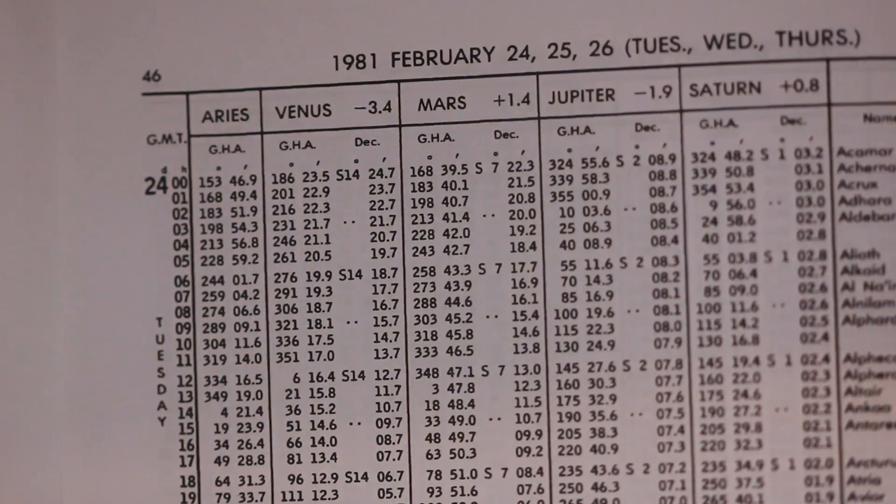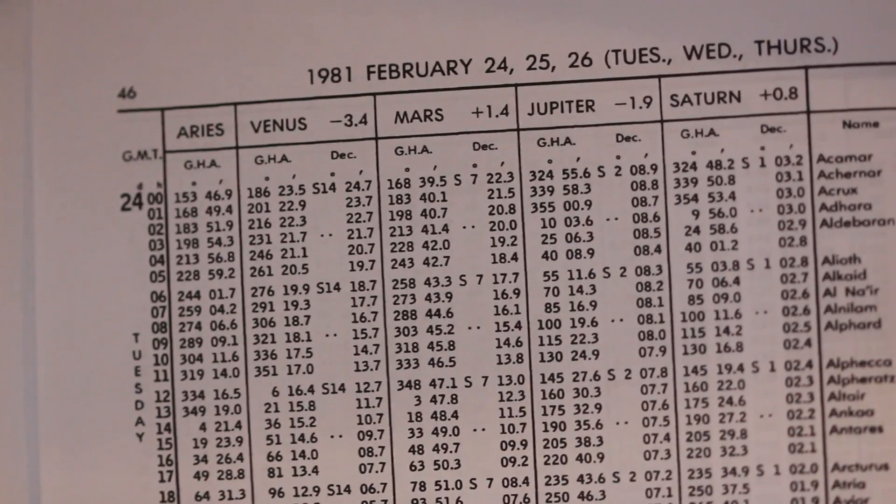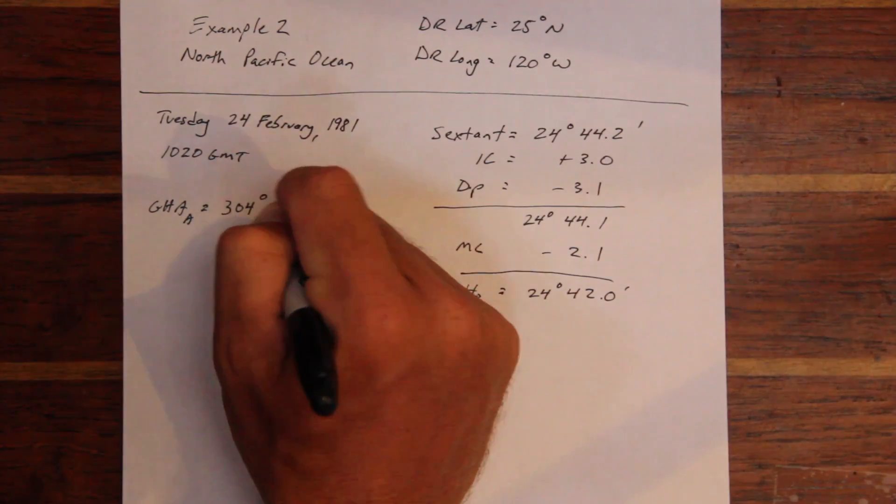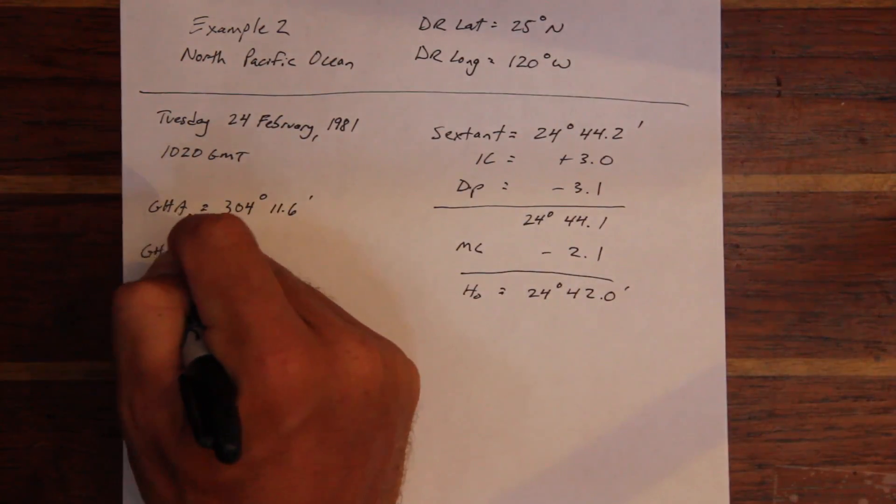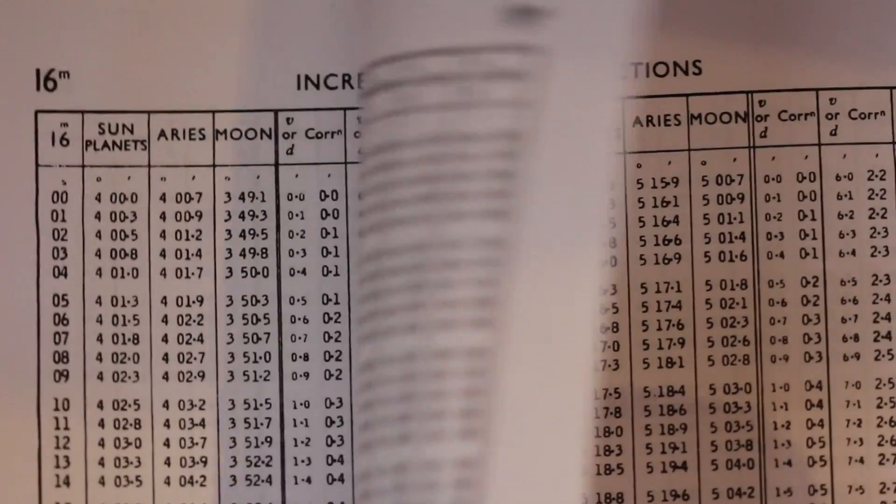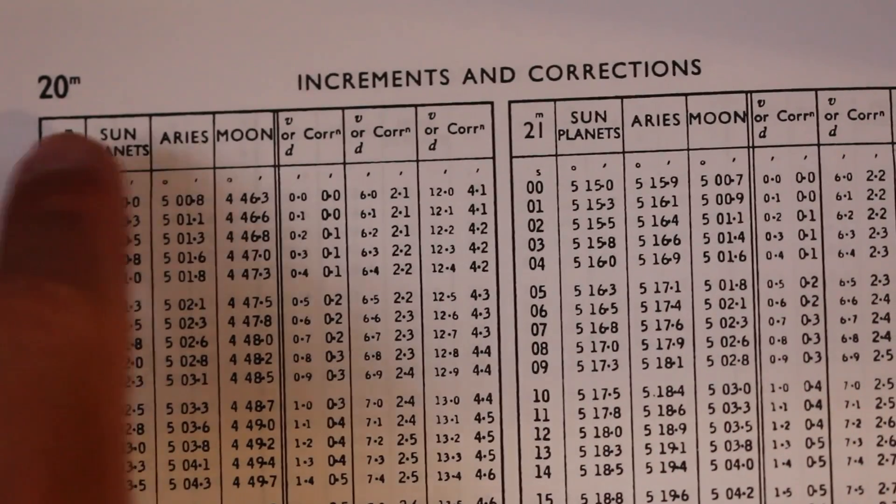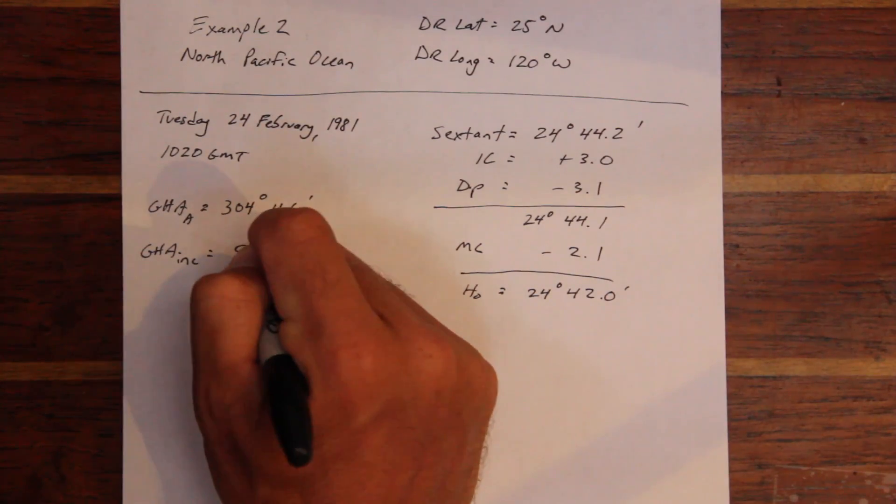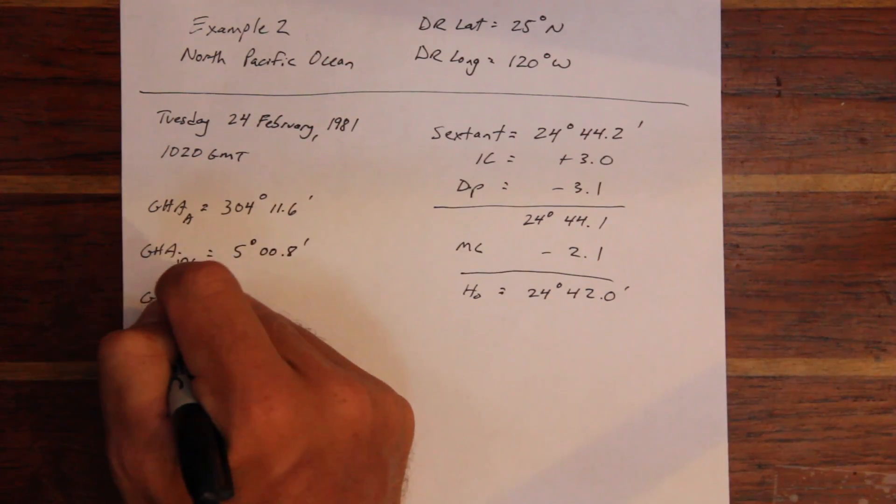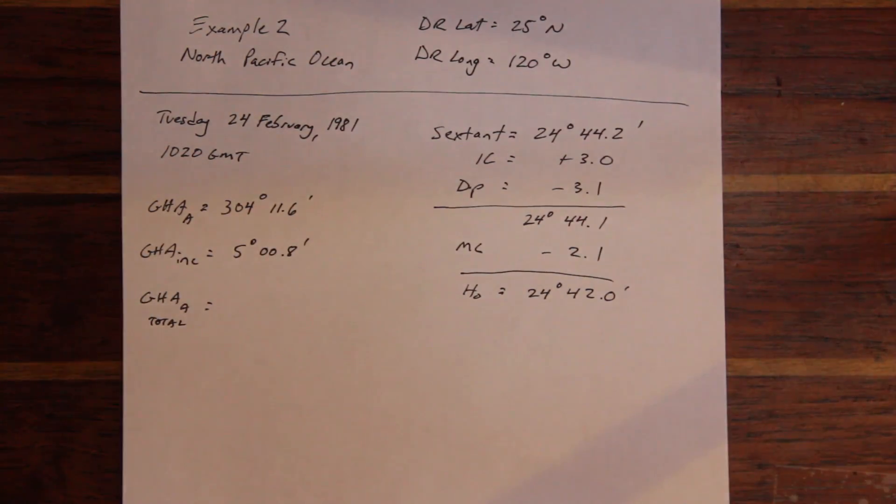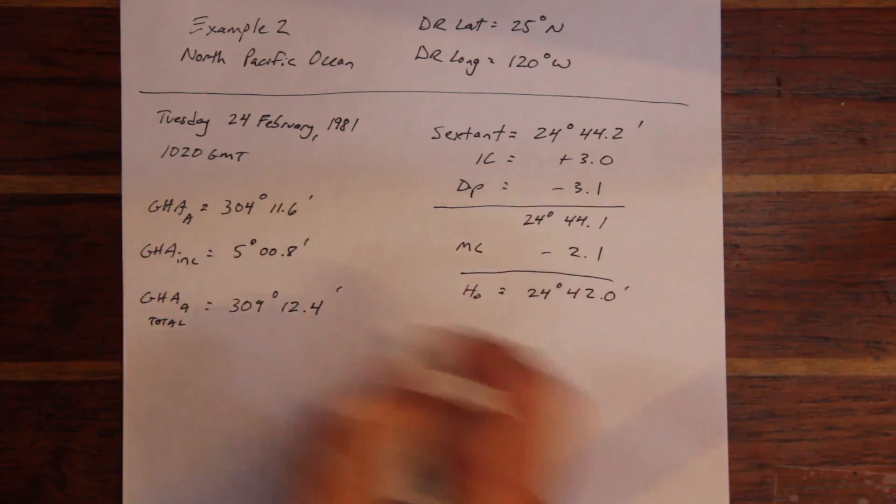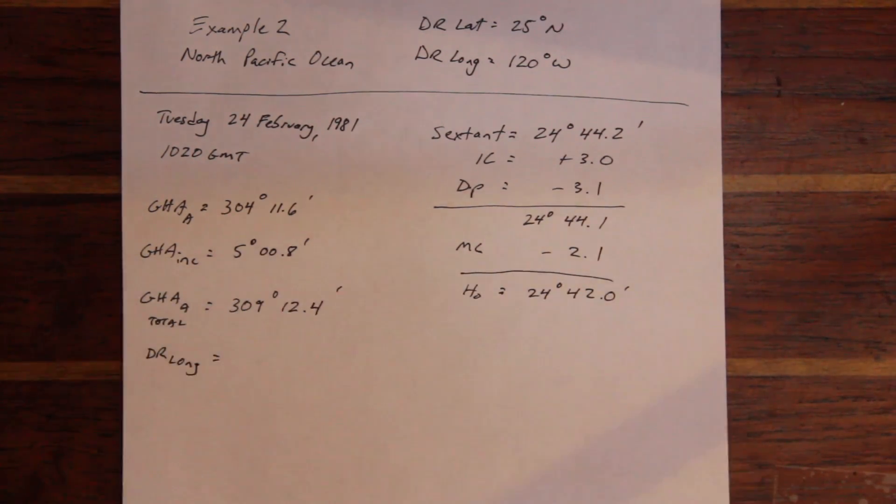In this example, calculating the GHA of Aries is slightly more complicated. We need to determine the whole hours of GHA and then the increments of GHA, similar to calculating declination for the sun. Always remember to use the correct column in the increments and corrections pages. Once we've determined the total GHA for Aries, we can apply our dead reckoning longitude to come up with a local hour angle of Aries.